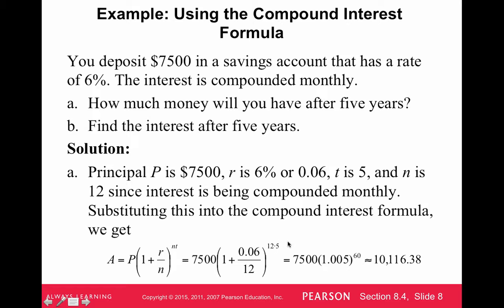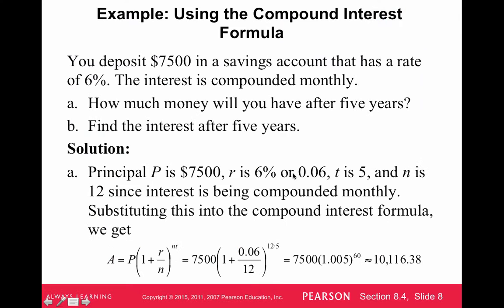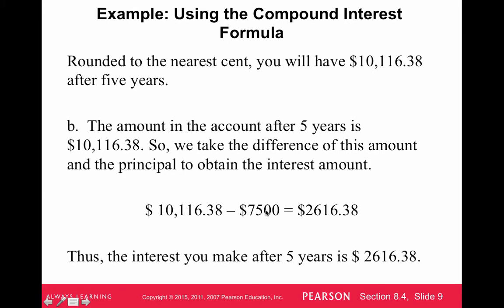We're doing monthly for five years, meaning 60 compounding periods. So I type in 7,500 times parenthesis 1 plus 0.06 divided by 12, close parenthesis, to the power of 5 times 12. That should give us $10,116.38. If you figure out the interest, it's just what we gained: $10,116.38 minus the $7,500 invested equals $2,616.38 in interest gained over the five years.